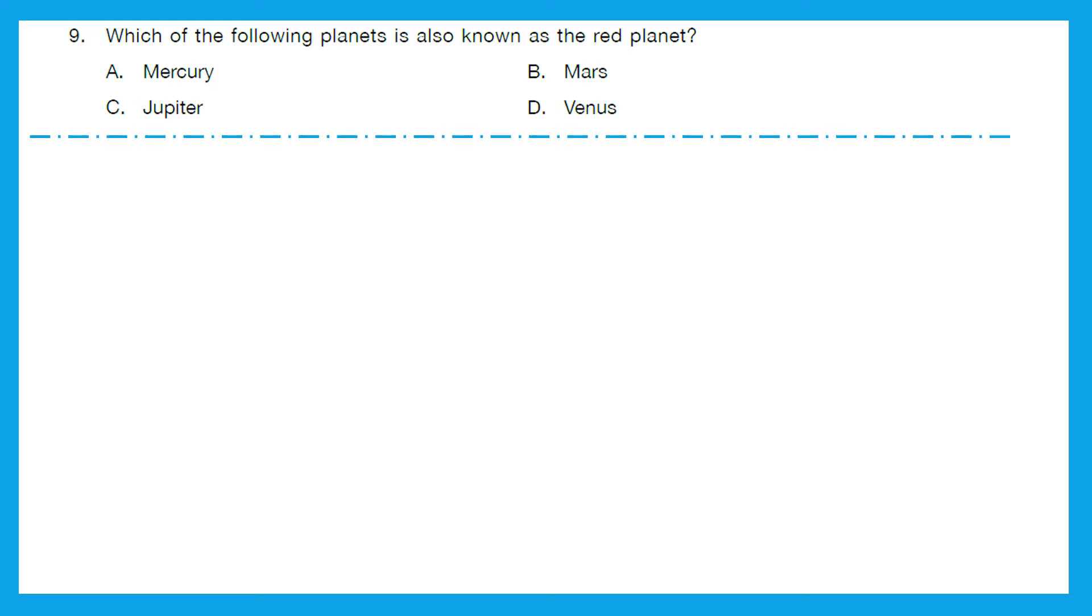Question 9: Which of the falling planets is also known as the red planet? Now let me quickly tell you why we call that planet as a red planet. Because the dust particle there has lot of iron content. And that is why we call it as a red planet. And the right answer is option B, Mars.